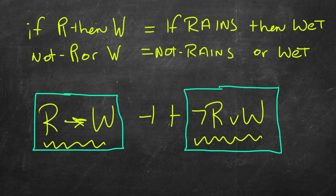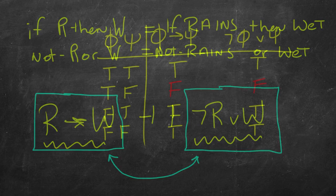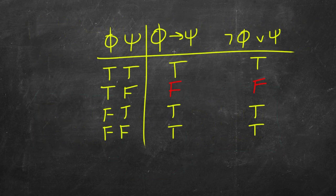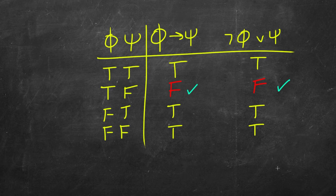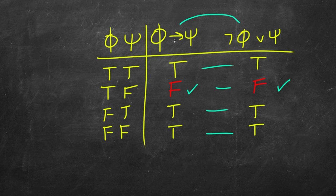For some people this is not quite obvious, so it's helpful to look at a truth table. Here we have the conditional — if phi then psi — and we see it's false in just one case, the second row. Then we have our disjunction — not phi or psi — and we see it's also false in just one case, with all other cases matching in truth values. So these two formulas are equivalent, which motivates the use of the implication rule.